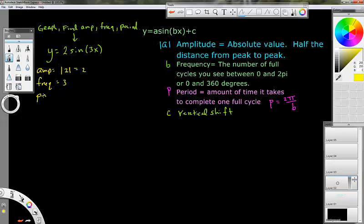The period, P-E-R-I-O-D, equals 2π over B. 2π over B. So it's going to be 2π over 3. So this right here is going to be our period. This is our frequency. This is our amplitude. These three things we need in order to graph.